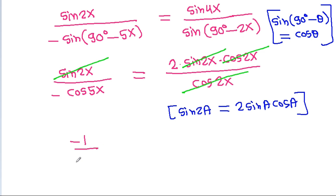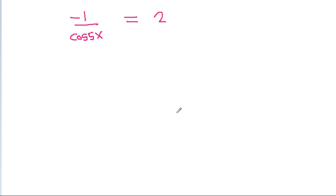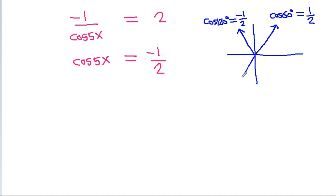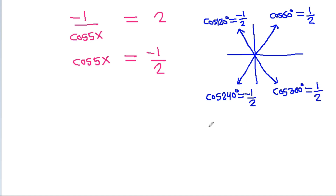So we get minus 1 divided by cos 5x equals 2, which gives cos 5x equals minus 1/2. Now, cos 60 degrees is 1/2, cos 120 degrees is minus 1/2, cos 240 degrees is minus 1/2, and cos 300 degrees is 1/2.